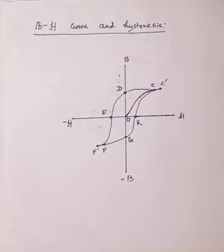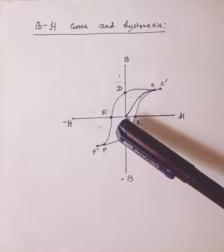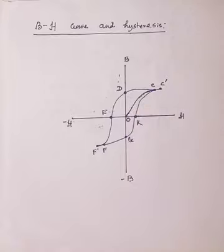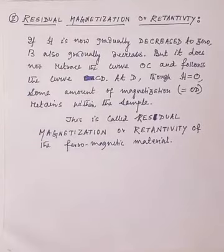So though H is equal to zero, some amount of magnetization which is equal to OD retains within the sample. And this is called retentivity or residual magnetization of the ferromagnetic sample. So this is our residual magnetization.